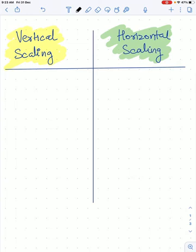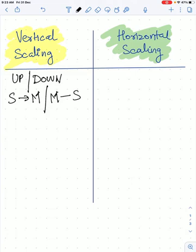Vertical scaling is when you are increasing or decreasing the size of the warehouse. Let's say you want to increase or decrease the size. That means you want to move from a smaller warehouse to a bigger one like medium, or you want to decrease from medium to small. This is called vertical scaling when you are resizing the warehouse.